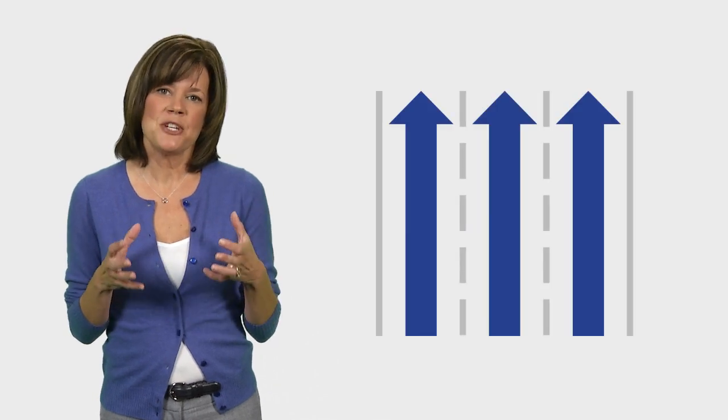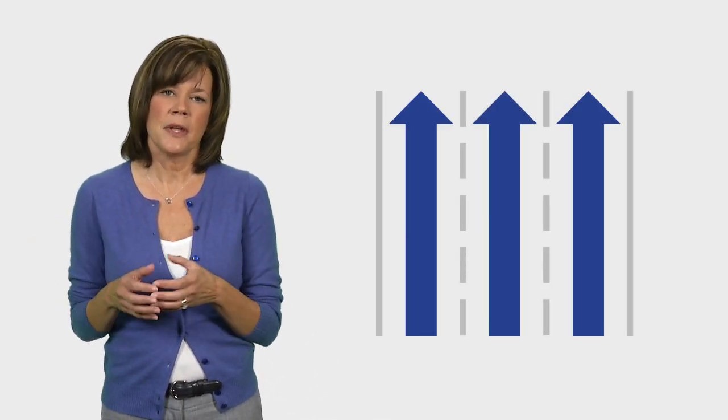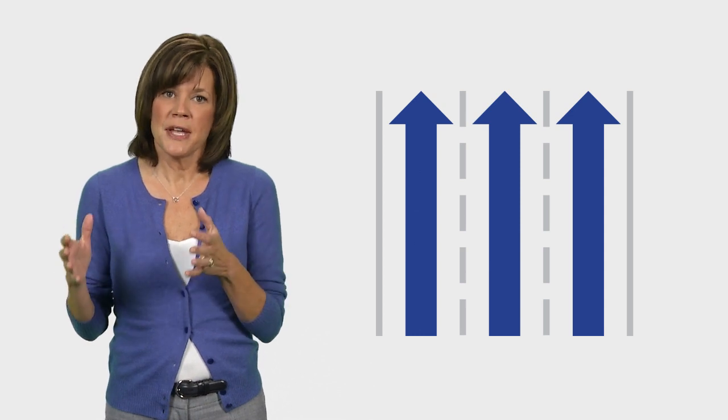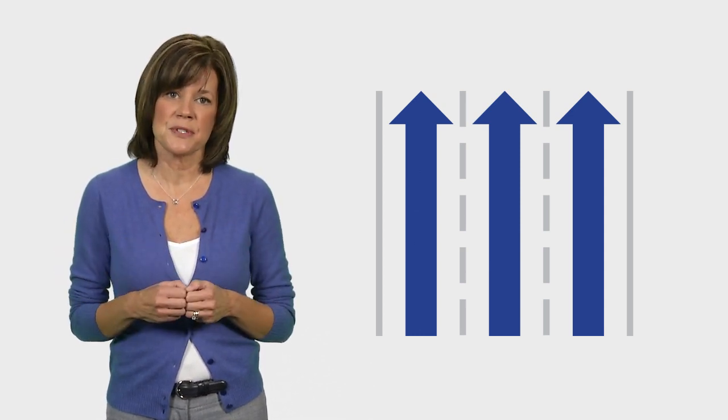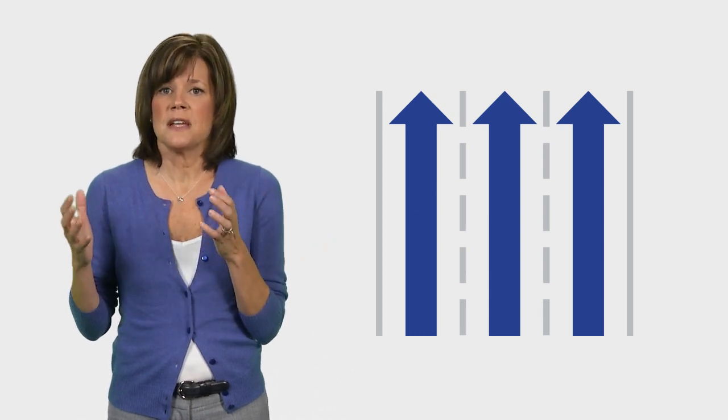Traditional non-matrix organizations operate like lanes on a highway. Each lane is a product or service, and each lane has everything it needs to support that part of the business—all the resources, expertise, and infrastructure.